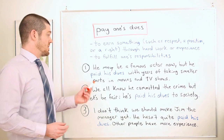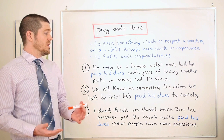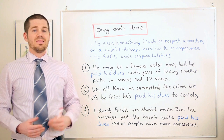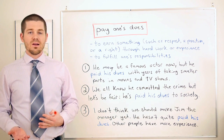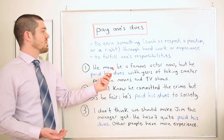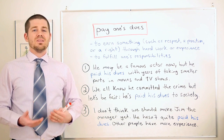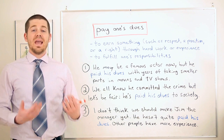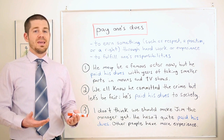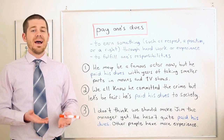The first example: 'He may be a famous actor now, but he paid his dues with years of taking smaller parts in movies and TV shows.' This is pretty common in the entertainment industry. An actor or singer doesn't just become famous suddenly — they have to put in years of hard work, taking small parts or appearing in bad TV shows to gain experience. After they've put in that hard work, they can get bigger movie roles and maybe become famous. All those small movies and bad TV shows — that is paying their dues.